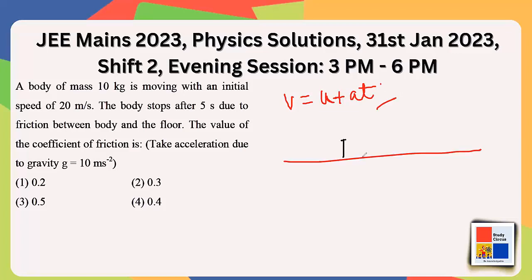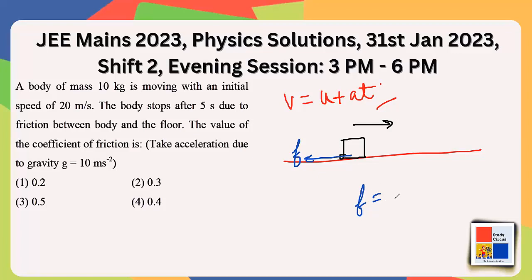The block is moving in one direction, so the friction force is applied in the opposite direction. Since there is relative movement between the surfaces of the block and the ground, this is kinetic friction. The friction force equals mu kinetic times the normal force, which is Mg.